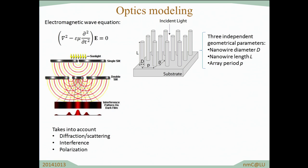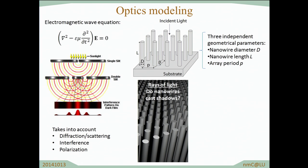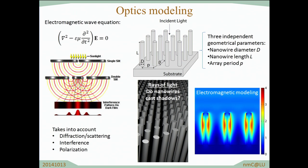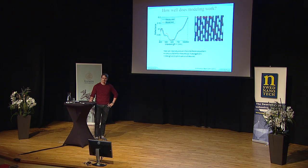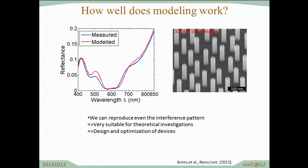With the nanowires, we take into account three different geometrical parameters: the diameter, the length, and the period of the nanowires. What we want to know is: do these nanowires cast shadows? If they would cast shadows, the optics would look like in this image here. But what we find instead is that these nanowires work as optical antennas — they actually collect light from a large surrounding. Here we have modeling, and we need to know: does this modeling actually work? Can we trust it? Here are our experimental results compared to the modeling results. The blue curve is modeled reflection from a nanowire array and the red curve is the measured result, and they show excellent agreement, including the interference pattern, which is one of the hardest things to reproduce in modeling.